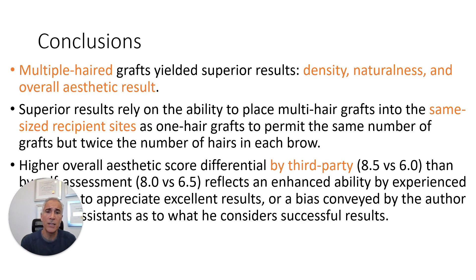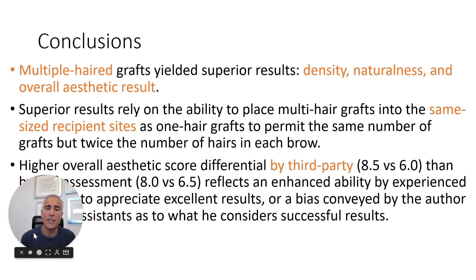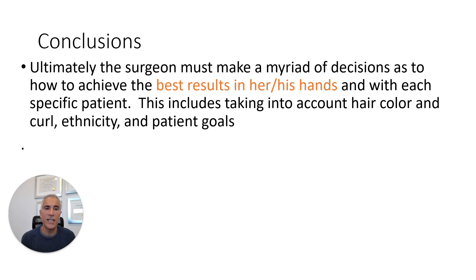My conclusion: multi-hair grafts yielded superior results in terms of density, naturalness, and overall aesthetic result. Superior results rely on the ability to place multi-hair grafts in the same sized 0.5 millimeter recipient sites as one-hair grafts, permitting the same number of grafts but twice the number of hairs in each brow. The difference was greater by third-party observer than by self-patient assessment, which probably reflects an enhanced ability by experienced technicians to appreciate excellent results, or possibly a bias conveyed by the author to his assistants. Ultimately, the surgeon must make a myriad of decisions to achieve the best results, taking into account hair color and curl, ethnicity, and patient goals. Thank you.